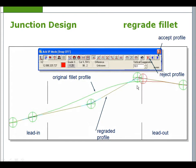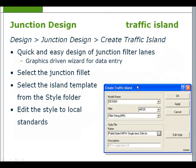Quick vertical alignment uses the IP method for the vertical design. The regrading of the junction need not be constrained merely to the fillet string — the adjacent carriageway edges may also be adjusted over the lead-in and lead-out lengths.